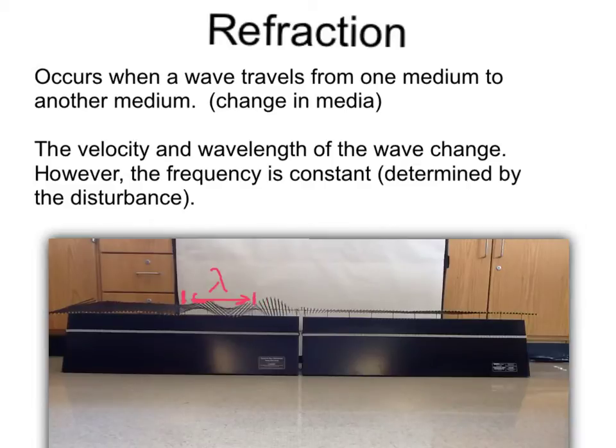If we continue and see it travel from that long rod medium into the shorter rods, we can see that it speeds up, but we can also see that the wavelength increases. Now if we label the wavelength in the second medium, we can see that the distance from crest to crest is much larger. It's almost the entire length of that machine.